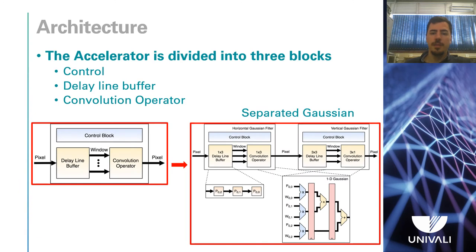The separated Gaussian version uses the characteristics of the Gaussian filter to divide the convolution into two stages. In the first stage, convolution is performed per line with a modified version of the delay line. In the second stage, convolution is performed by column. The two steps can take place in parallel. There is a need to work with larger data words to avoid overflow.